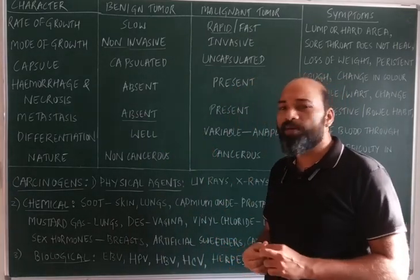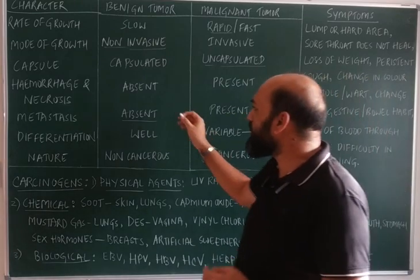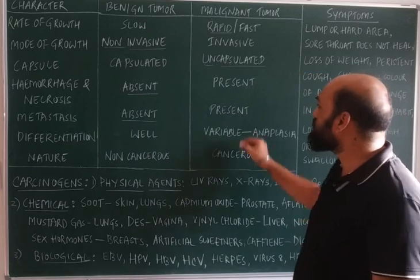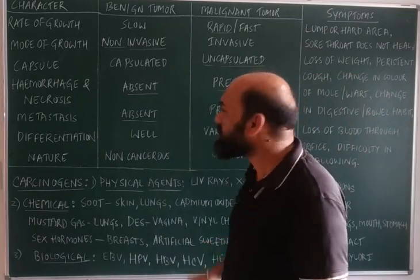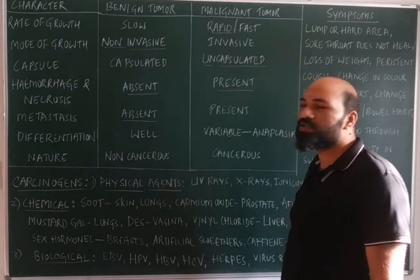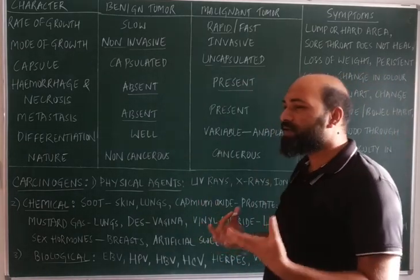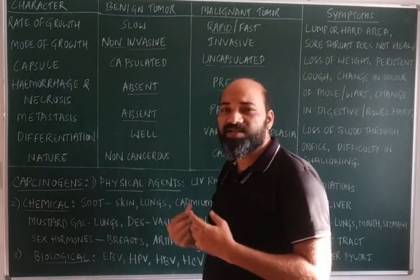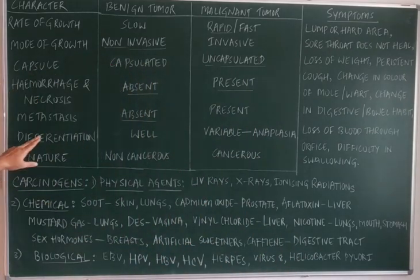The next difference is hemorrhage and necrosis. Hemorrhage and necrosis are absent in benign tumors, whereas they generally occur in malignant tumors. Necrosis refers to cell death — normal cells die due to the presence of cancerous cells.